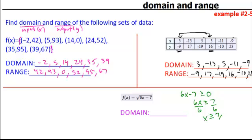you get x is greater than or equal to 7 over 6. Here is our restriction, and if we rewrite this in interval notation to find the domain, the domain is going to be all real numbers that are greater than or equal to 7 over 6.